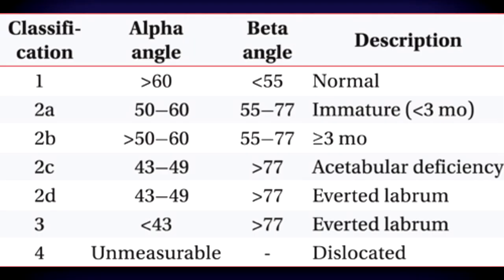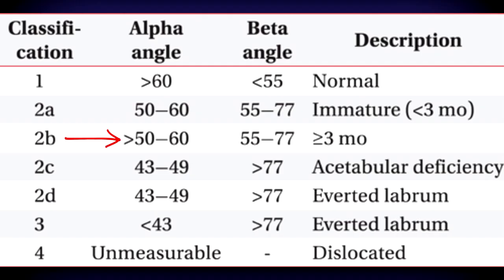Here's the Graf classification system for hip types. Type 1 is normal: alpha angle 60 degrees or more, beta angle 55 degrees or less. A subtype 2A has an alpha angle of 50 to 60 degrees; in a baby three months or less, this is considered physiologically immature and will likely resolve on its own — they'll refer for follow-up. If the baby is three months or older with the same 50 to 60 degree alpha, it's considered mild dysplasia. There are varying degrees of increased severity up to a very shallow acetabulum with averted labrum. Type 4 is a dislocated hip, where the femoral head is completely outside the acetabulum.